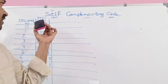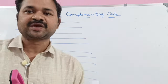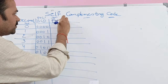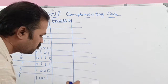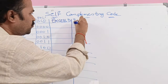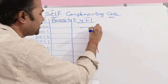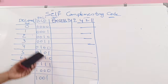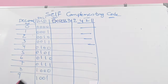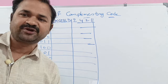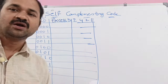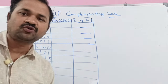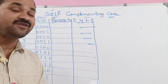Now, let us discuss about self-complementing codes: XS3 code and 2421 code. These two codes are known as self-complementing codes. First, let us represent the decimal numbers from 0 to 9 in XS3 notation and 2421 notation, and later we are going to discuss about what is a self-complementing code and why XS3 code and 2421 codes are known as self-complementing codes.